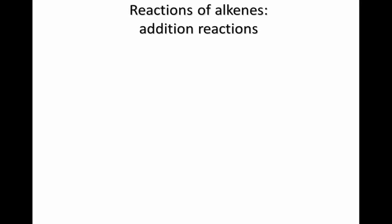The next type of reactions that alkenes undergo is addition reactions. In this kind of reaction, we start with a double bond. I'm using the R to indicate some other part of the molecule. And it undergoes an addition reaction.